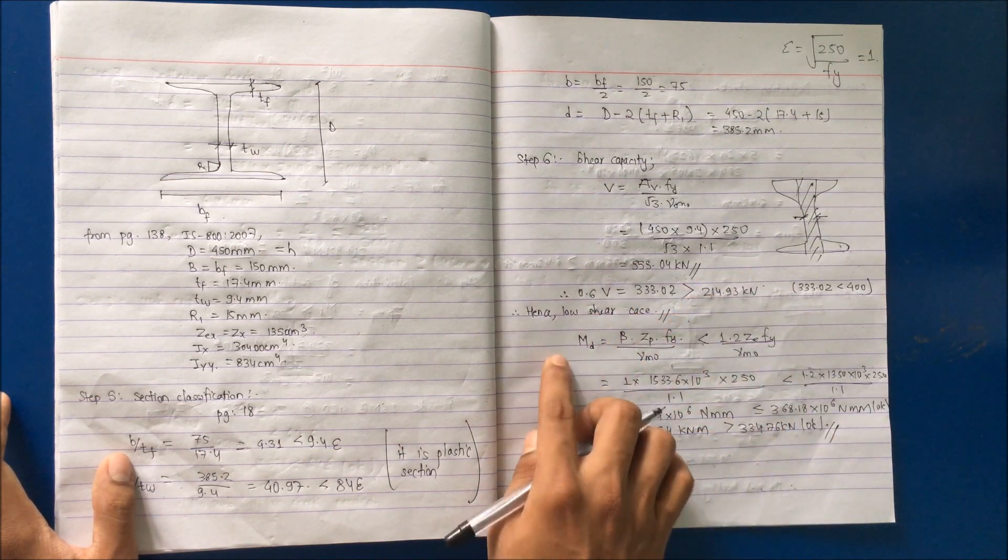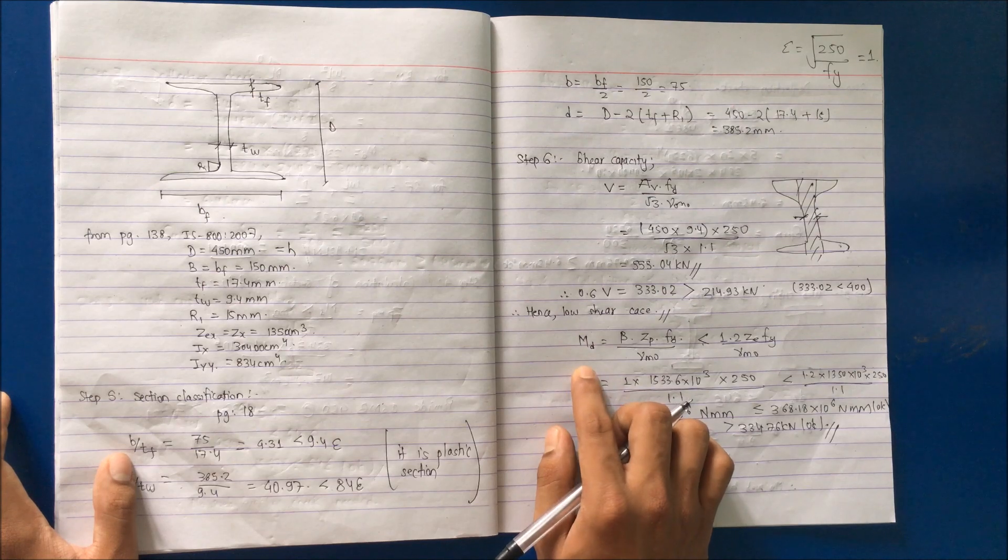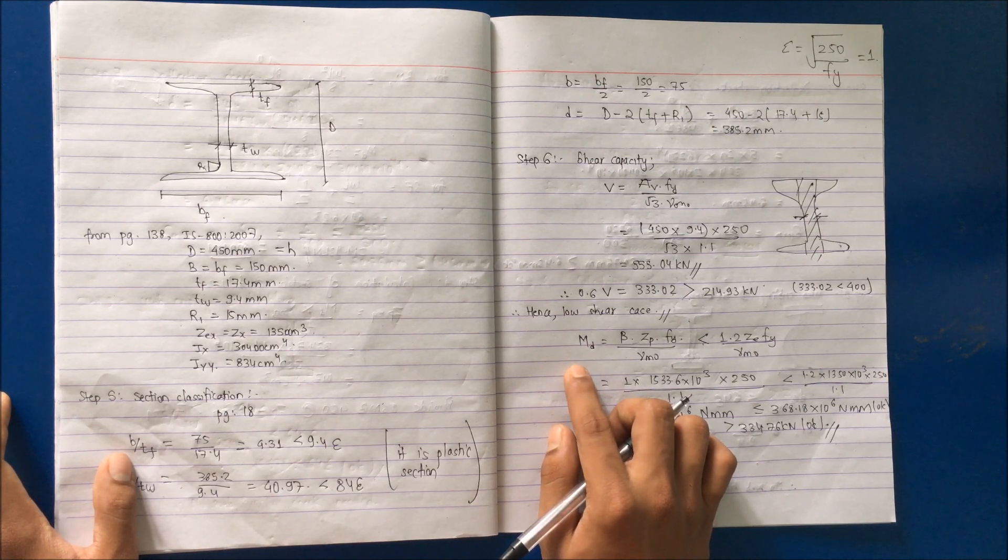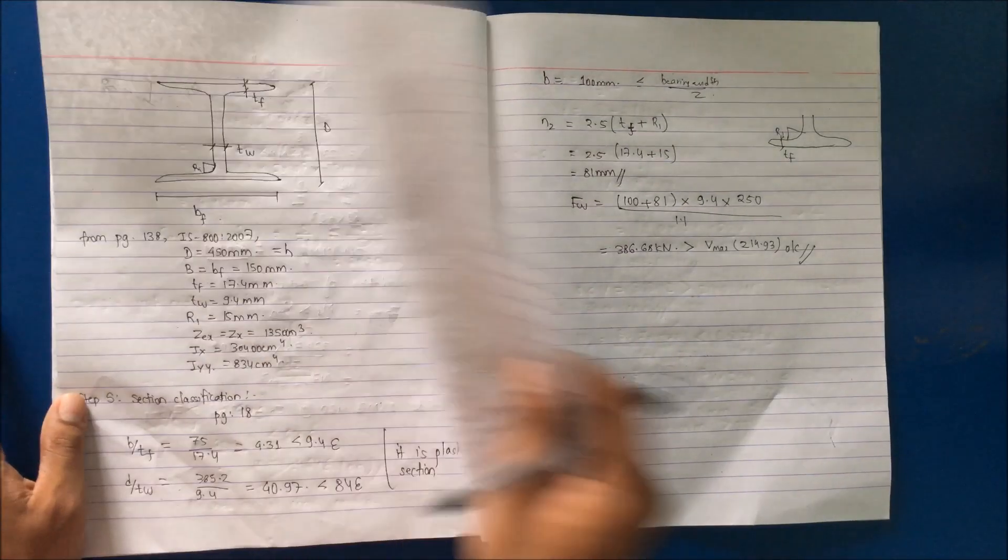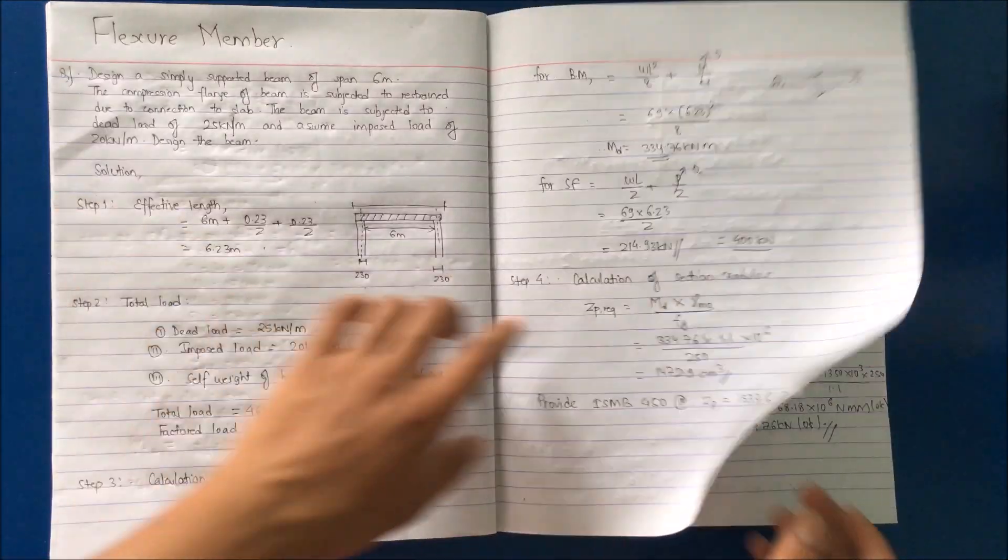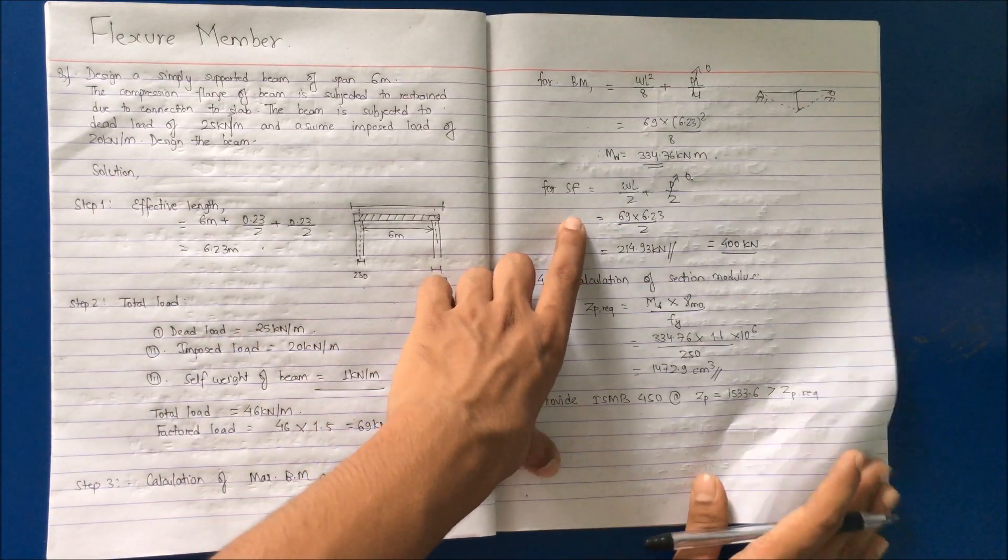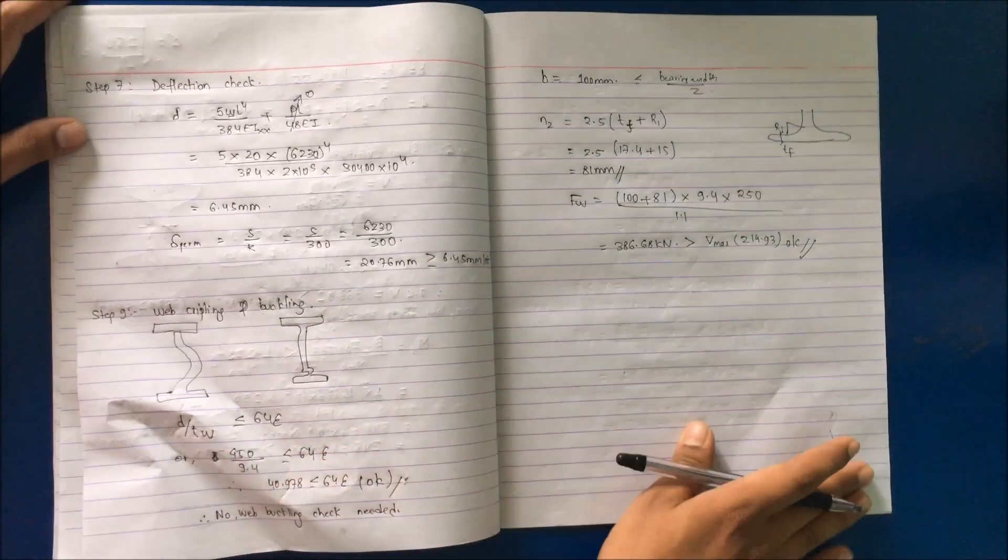Now the calculation of design bending strength will be different. We have to go to page number 70 and follow the steps. What I suggest is you copy all this data and make sure you put the value of shear capacity V as 400.